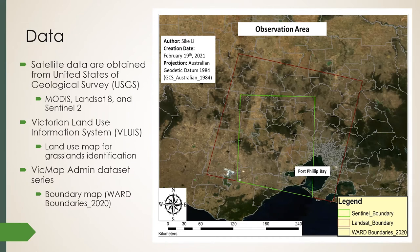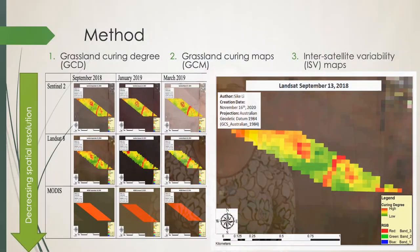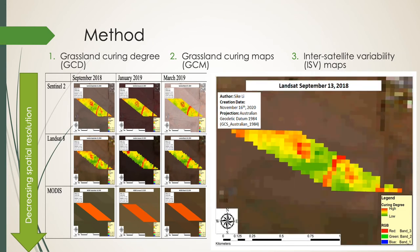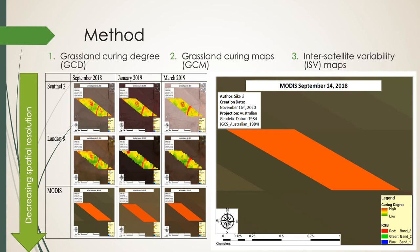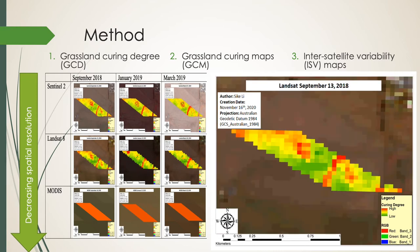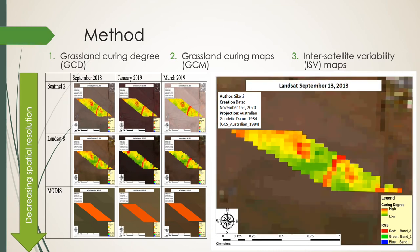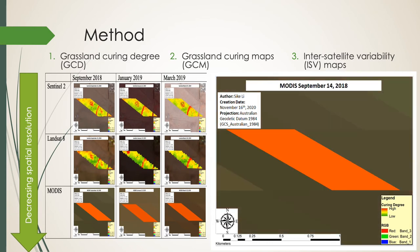The figure on the right shows the boundary of my observation area. I used the satellite data to calculate grassland curing degree (GCD), which are then made into grassland curing maps. The differences between grassland curing degrees calculated by different spatial resolution satellites are called inter-satellite variability (ISV), and these are then made into ISV maps.